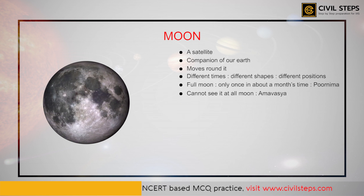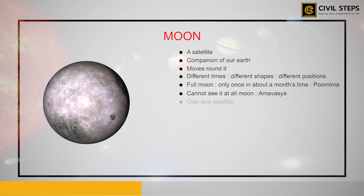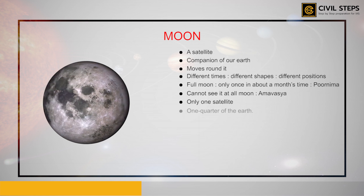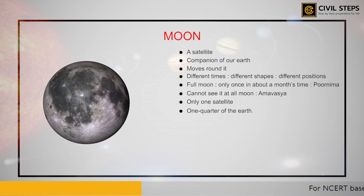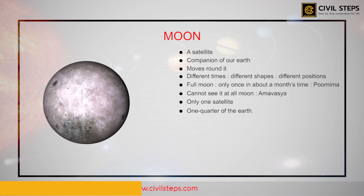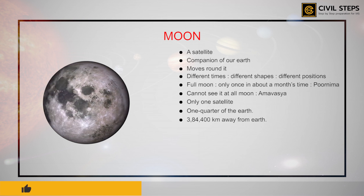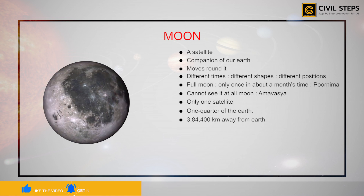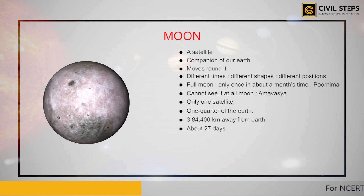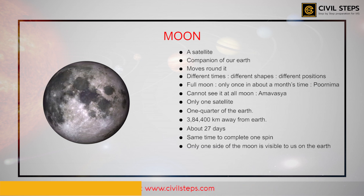Our Earth has only one satellite, and that is the Moon. The diameter of the Moon is only one quarter that of the Earth. It appears so big because it is nearer to our planet than other celestial bodies. It is about 3,84,400 km away from us. The Moon moves around the Earth in about 27 days, and it takes exactly the same time to complete one spin. As a result, only one side of the Moon is visible to us on Earth.